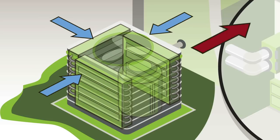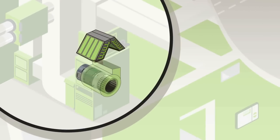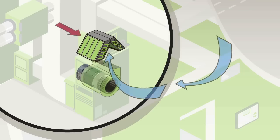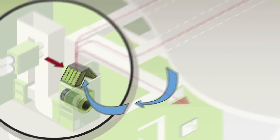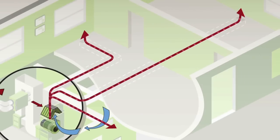Once the cool refrigerant is warmed, it is sent into your home's indoor evaporator coil. The blower pulls cool air from throughout your house and moves it over the evaporator coils, which warm it and circulate it through your home.